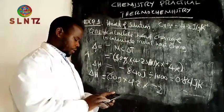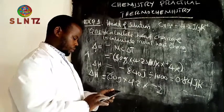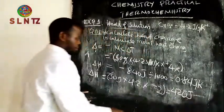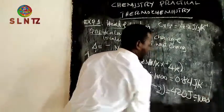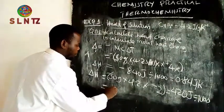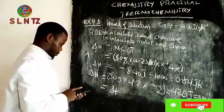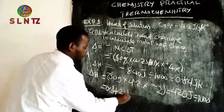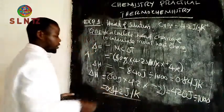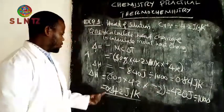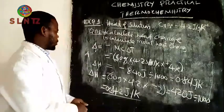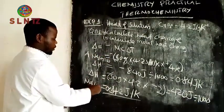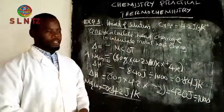When you multiply 50 times 4.2 times 2, the result in joules divided by 1000 will be 0.42 kilojoules. So this is the heat change. For the first experiment — anhydrous sodium carbonate — this is the heat change. For the second experiment — hydrated sodium carbonate — this is the heat change. That is the answer to the first question.